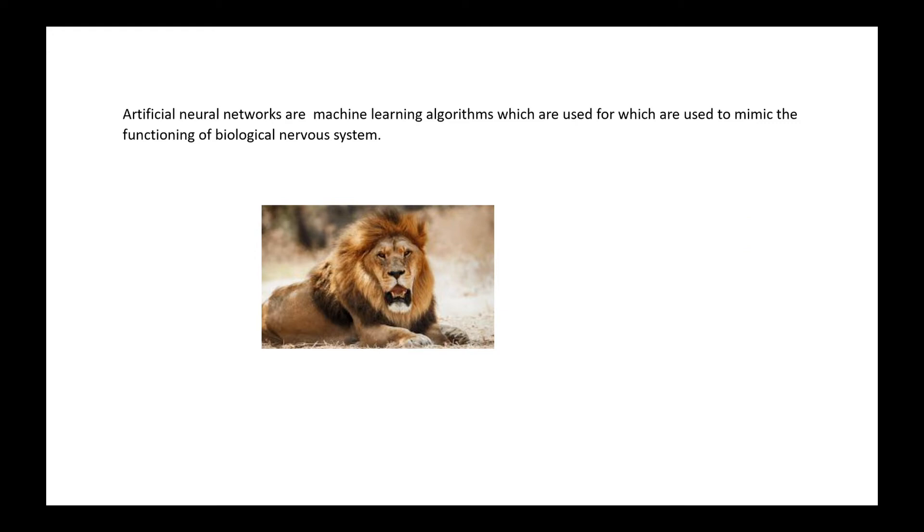Then it comes up with an image which has similar size and features. Then it says yes, it looks same, so it is termed as lion. In the similar way our biological nervous system works, and this is how artificial neural network is designed to work, both in terms of images as well as other data sets as numericals and many more.